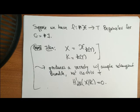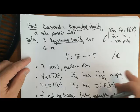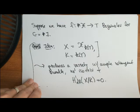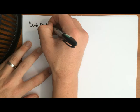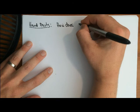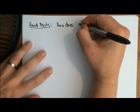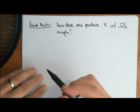This comes from the construction of the Bogomolov family. One of the hard parts is: how does one produce X with Ω¹_X ample?